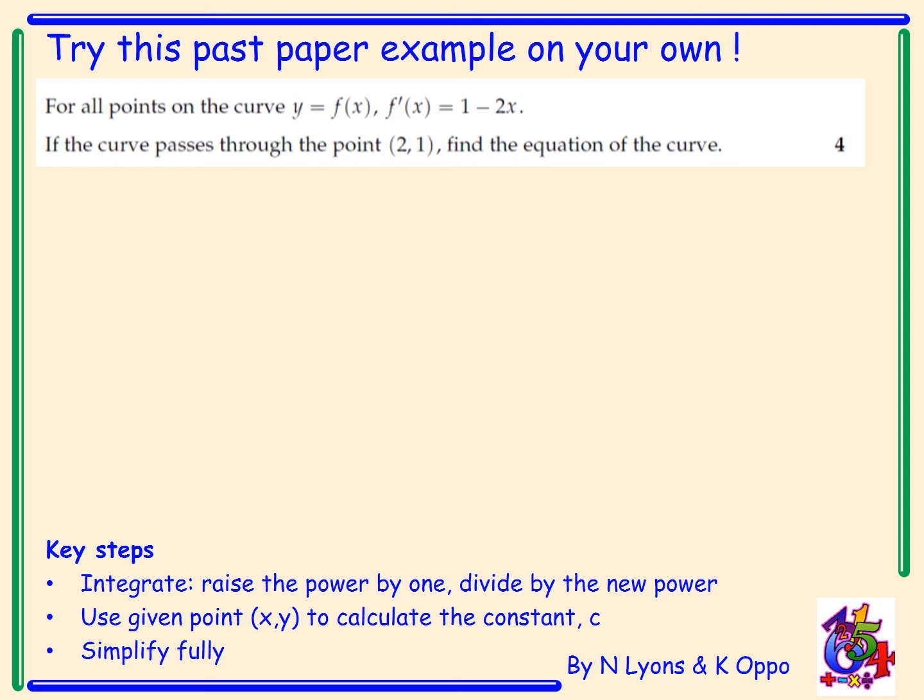Let's look at the answer. First, write the statement: f(x) equals integral of f'(x) dx. When we integrate, we sub in the function: f(x) equals integral of 1 minus 2x dx. Now we're integrating: x minus 2 over 2 x squared, which simplifies to x minus x squared plus c, the constant of integration.